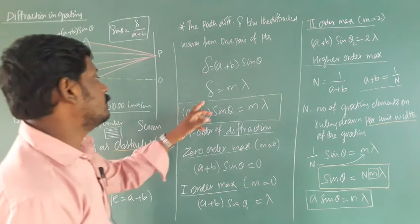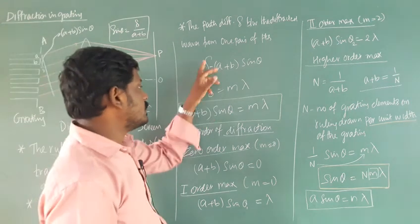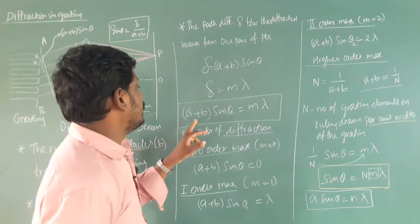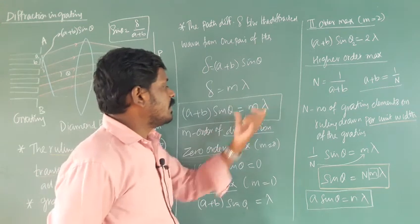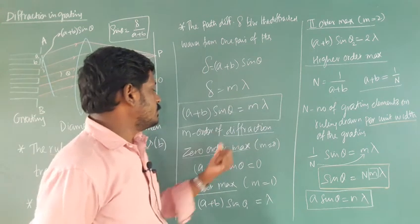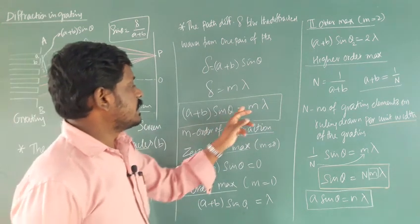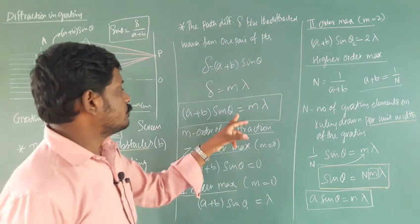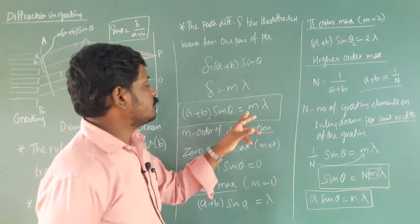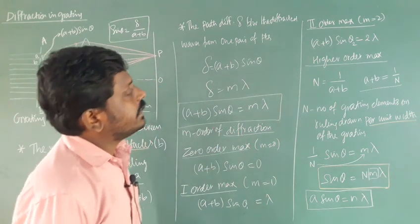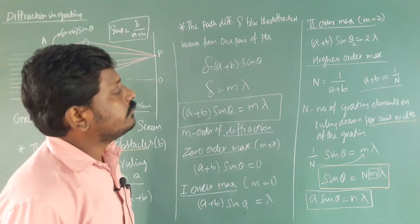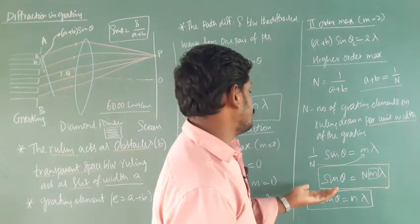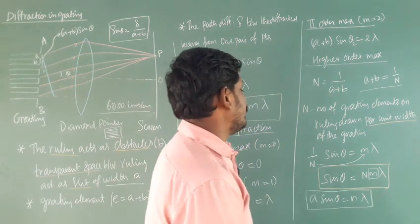Rearranging, the path difference delta equals (A plus B) sin theta. Since the path difference is the same for all successive corresponding points, setting delta equal to m lambda gives the general formula: (A plus B) sin theta equal to m lambda. For higher orders, sin theta equals n m lambda.